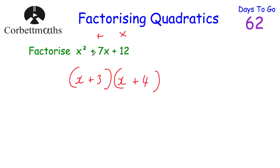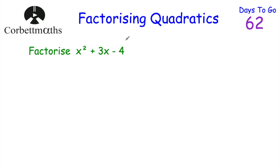You could have written it the other way around as x plus 4 and x plus 3 — it doesn't matter which order the two brackets are in. So the answer is x plus 3 times x plus 4. You can check it: expanding gives x squared plus 4x plus 3x plus 12, and the 4x and 3x add together to give the 7x. So that's it. Let's have a look at our next question.